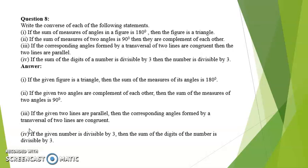Second: if the sum of measures of two angles is 90 degrees then they are complements of each other. Converse: if the given two angles are complements of each other then the sum of measures of the two angles is 90 degrees.